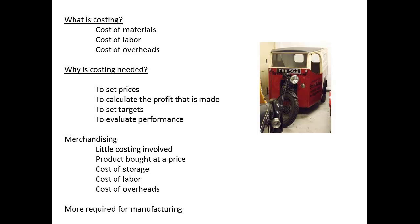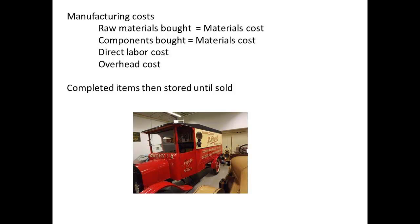For a merchandising business, costs are fairly easily identified, since the goods are purchased at one price and then sold on at a higher price. The costs involved include any storage, labour, and other overheads. For a manufactured good, the costs are a little more involved. Raw materials and components are bought and assembled into a good that is then sold. These produce materials costs, the labour used directly to produce the good is called direct labour, and there will also be overheads to be added to the cost. The completed items are then stored until sold.